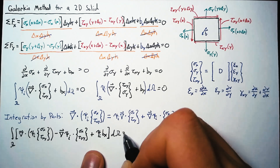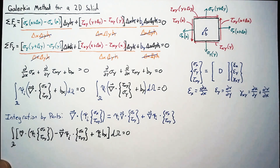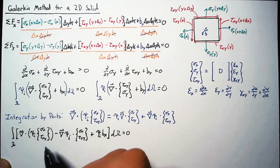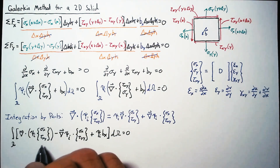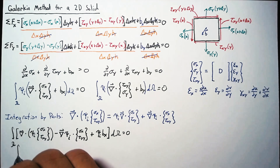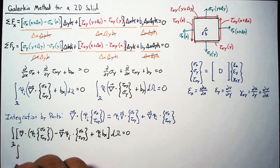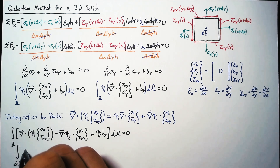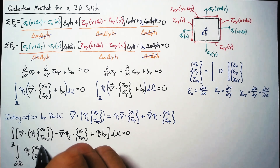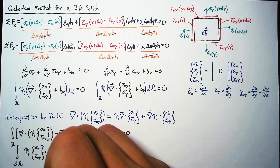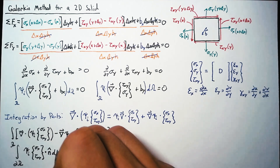We solve for that piece and substitute it into our equation. This gives us an integration over omega: the divergence term with psi_i times [sigma x, tau xy], minus the gradient of psi_i dotted with [sigma x, tau xy], plus the body force term. The first term is a statement of the divergence theorem, so we can rewrite it as an integral on the boundary of omega: psi_i times [sigma x, tau xy] dotted with the outward normal n-hat times the differential area dA.